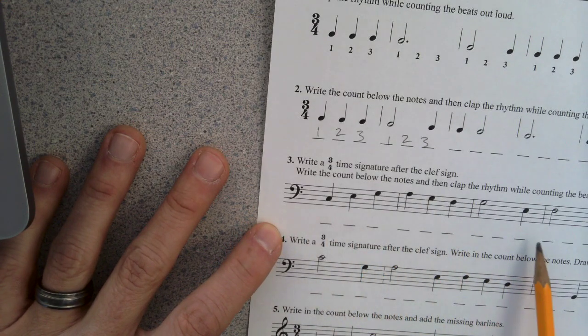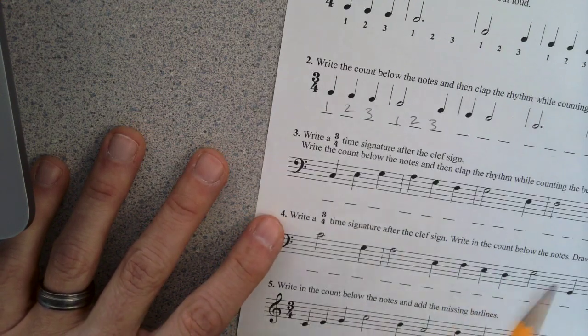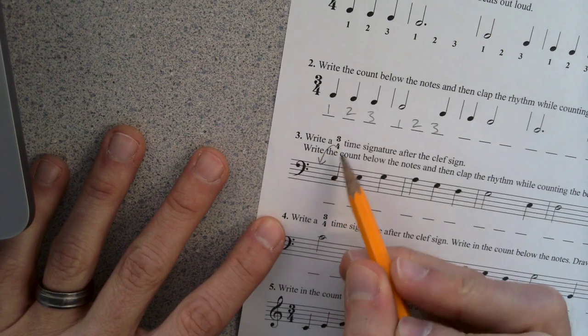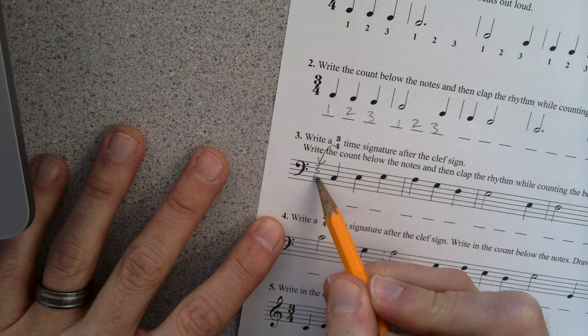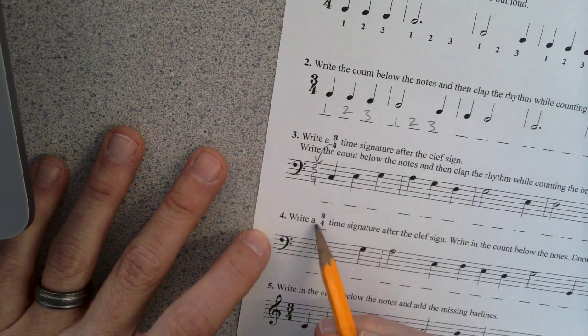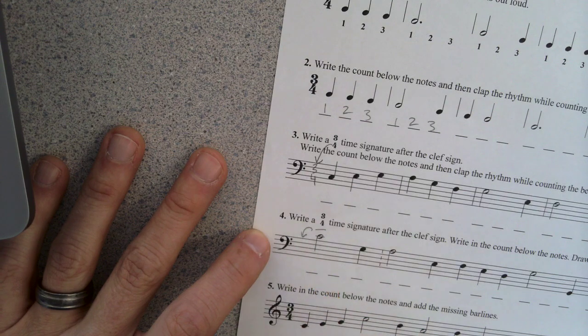Almost everybody in the room made the same mistake. They forgot to write this fraction down here. So put three, four right here. And same thing here. It says really clearly, write a three, four time signature right there. So do that.